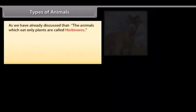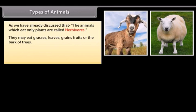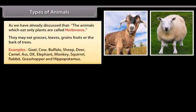Animals which eat only plants are called herbivorous. They may eat grasses, leaves, grains, fruits, or the bark of trees. Examples include goat, cow, buffalo, sheep, deer, camel, ass, ox, elephant, monkey, squirrel, rabbit, grasshopper, and hippopotamus.